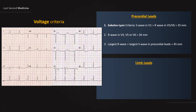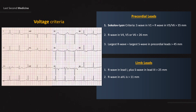Now, criteria that use limb leads for voltage calculations: R-wave in lead I plus S-wave in lead III is more than 25 mm. R-wave in AVL is more than 11 mm. R-wave in AVL is more than 14 mm.